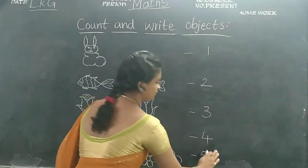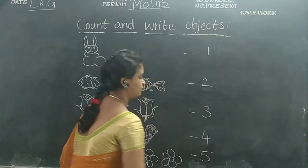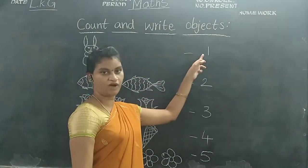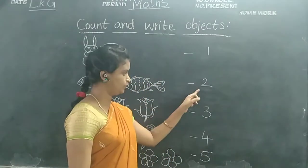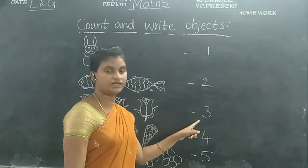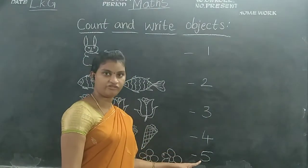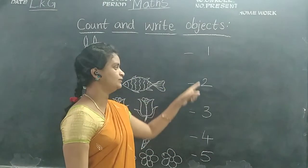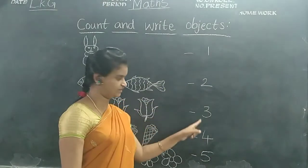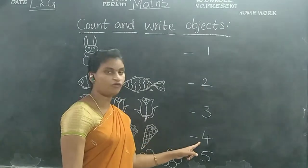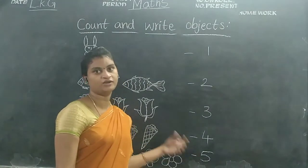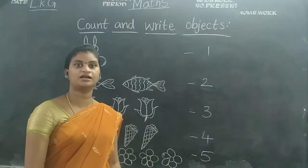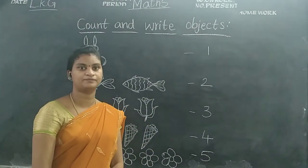Okay children. See children. One, two, three, four, five. One, two, three, four, five. Okay children. Practice them children like this. Okay. Thank you.